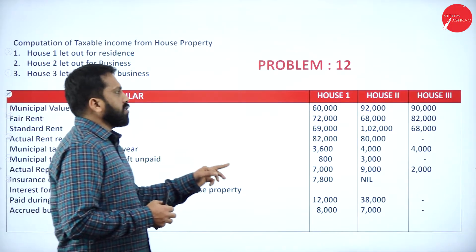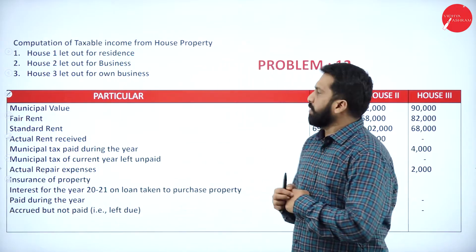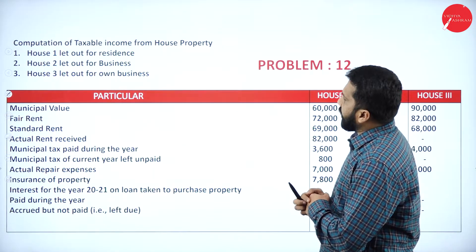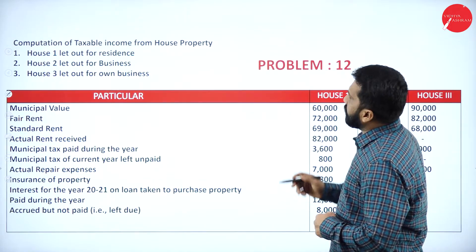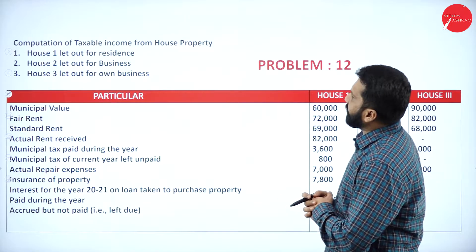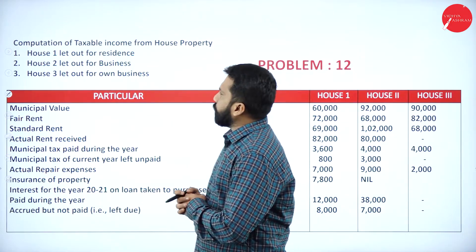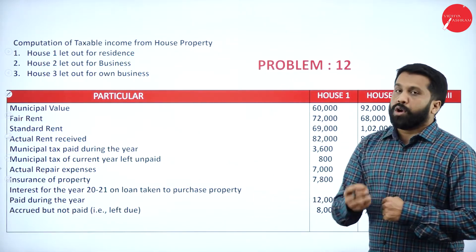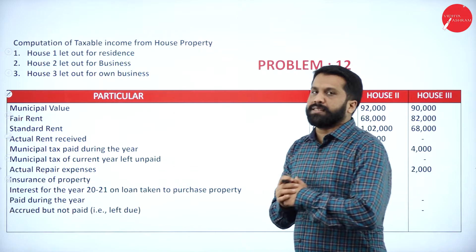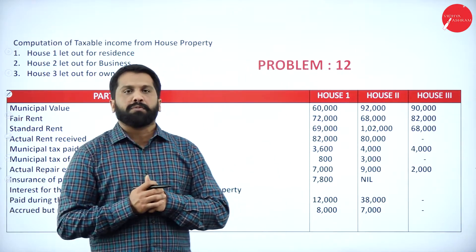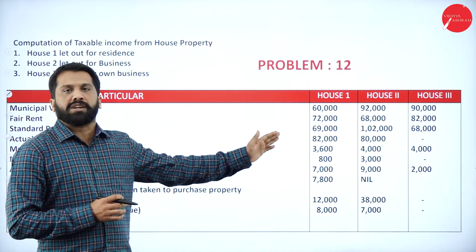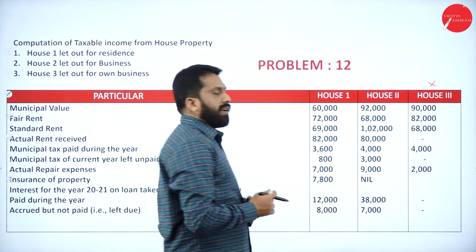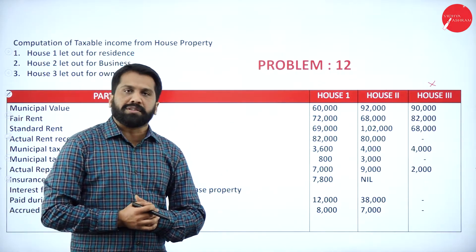So how do we calculate all this? You have House 1, House 2, as well as House 3. In House 1, you have municipal tax, fair rent, standard rent, actual rent — it is let out for residence, we have to calculate. House 2 is let out for business, we have to calculate. But House 3 is let out for own business — we have to consider this as self-occupied. For self-occupied, if there is any interest, we are supposed to consider that.